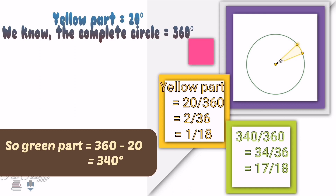So the fractional form of green is 340 by 360. Cutting out the common factor 10, we get 34 by 36. Again removing the common factor 2, we get 17 by 18. Similarly, we can find out the fractional form of each of the other figures using this same method.